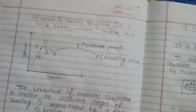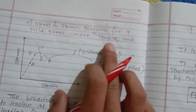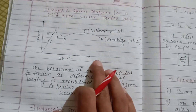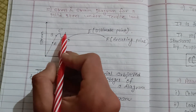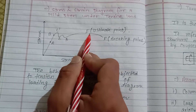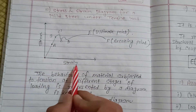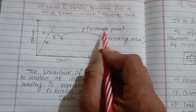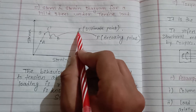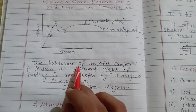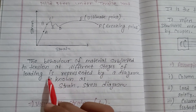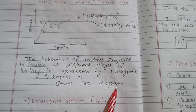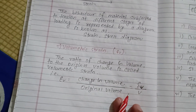The stress-strain diagram is drawn for a material under tensile load. The diagram has key points: A, B, C, C-dash, D, and E. These represent proportional limit, elastic limit, upper yield point, lower yield point, ultimate point (highest stress), and breaking point respectively. The behavior of materials subjected to tension at different stages of loading is represented by this diagram.